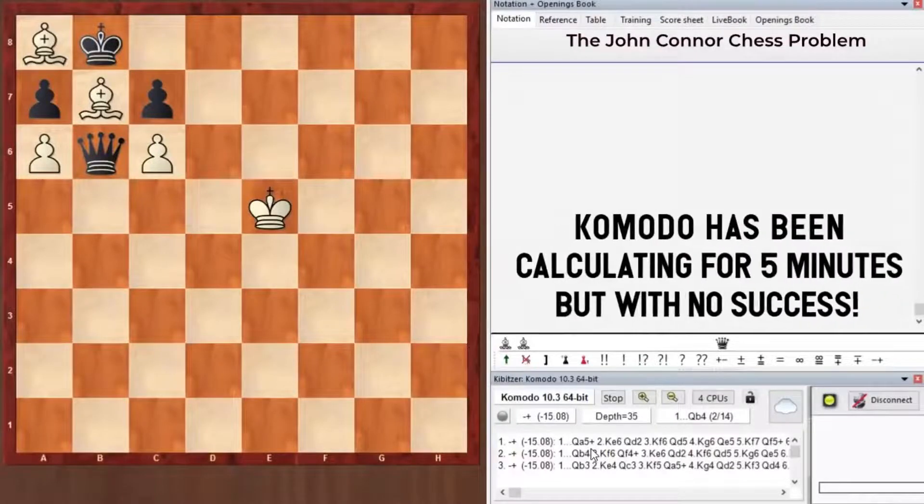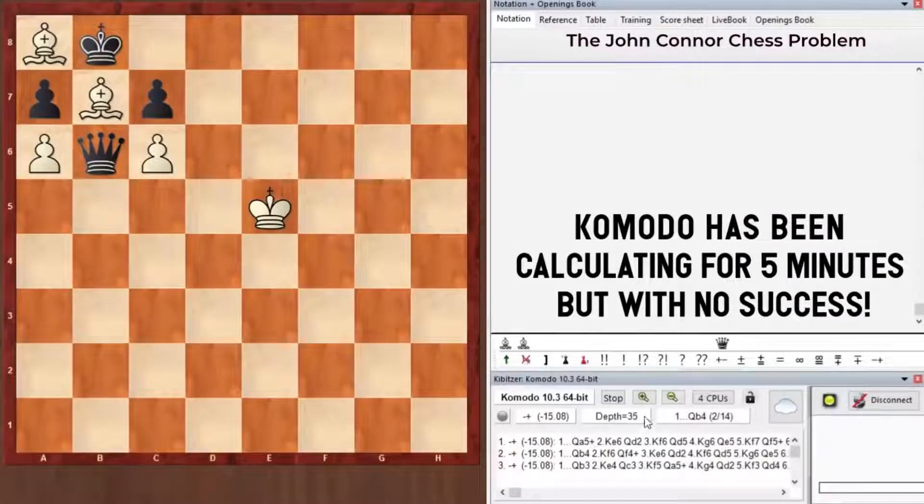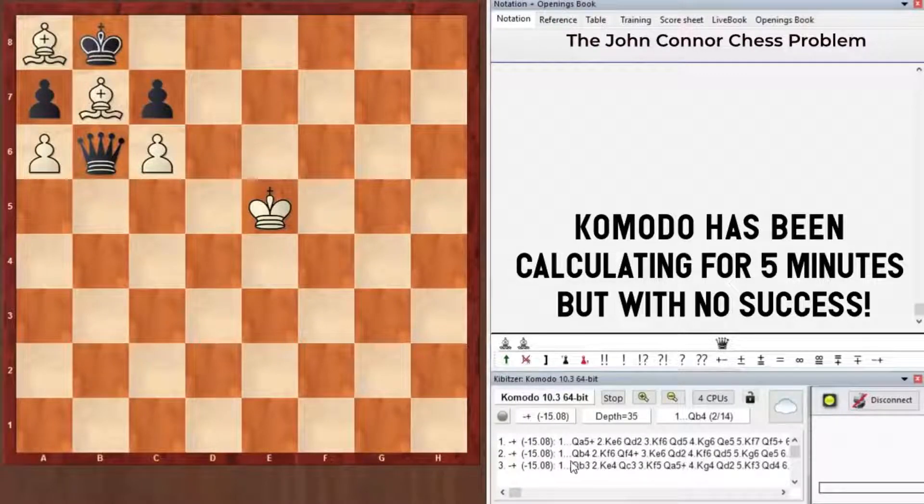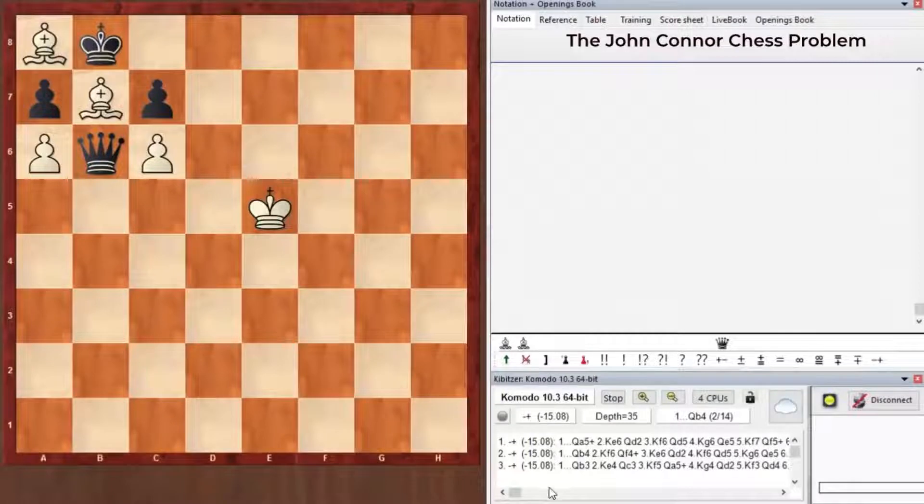So I see now that Komodo still can't solve the problem at the 35th depth of analysis and still can't find the final variation before the mate. It just shows some checks with the same evaluation. So it doesn't see any win.